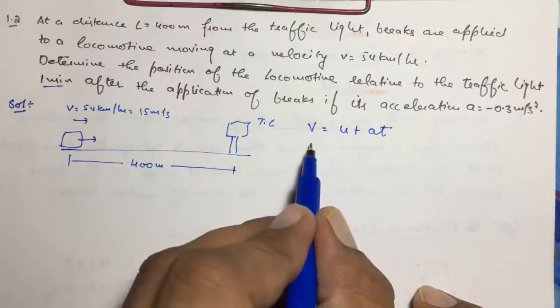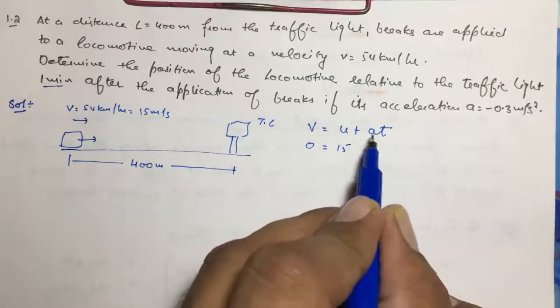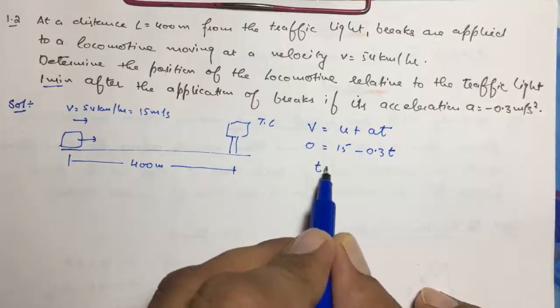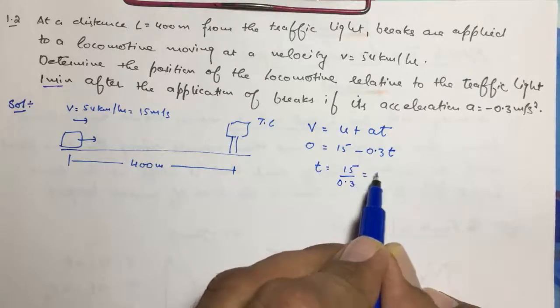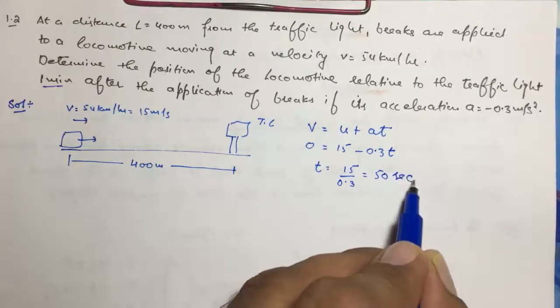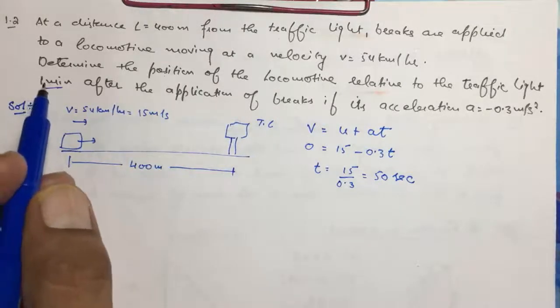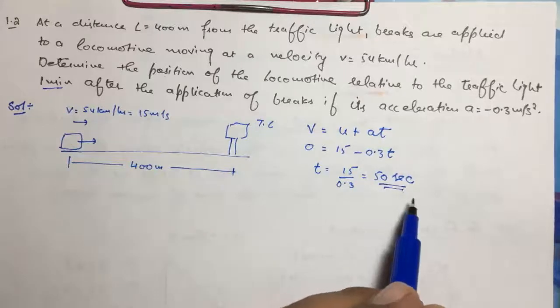V is the final velocity, let's say it is 0, initial velocity is 15 and A is -0.3T. Then T will come out to be 15 by 0.3, that is 50 seconds. It means they are asking the position after 60 seconds but the locomotive comes to rest in just 50 seconds.